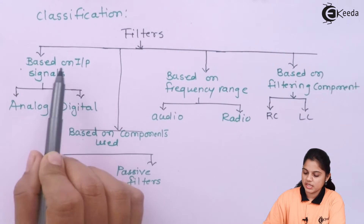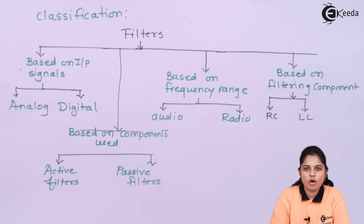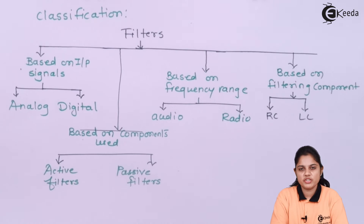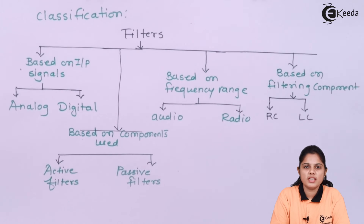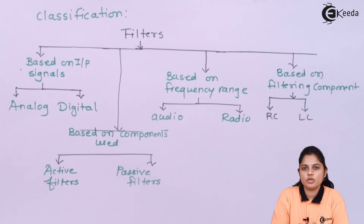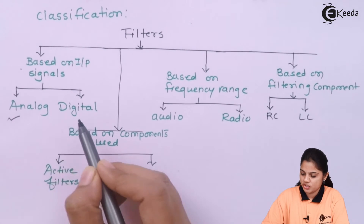First, based on input signal — your input signal can be analog or digital. In communication, you use both analog and digital signals. If it is digital communication, the input to the filter will be digital. So filters can also be of two types depending on the signal: analog or digital.